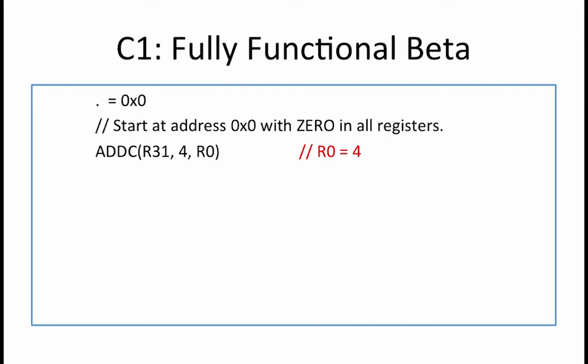When run on a fully functional beta with bypass paths and annulment of branch delay slots, the code behaves as follows. The ADDC sets R0 equal to 4. The BEQ stores PC plus 4 into R2. Since the ADDC is at address 0, the BEQ is at address 4, so PC plus 4 equals 8 is stored into R2, and the program branches to label X.